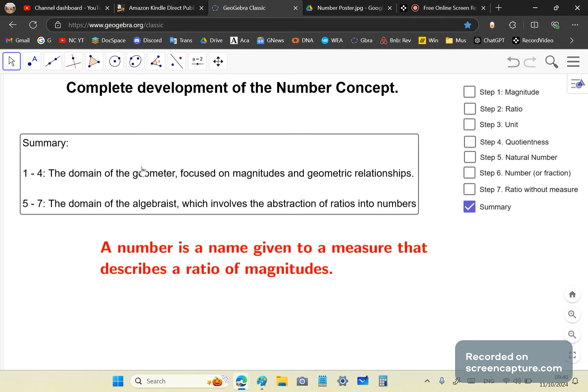There is a constant which exists as a realization of this failed measure, but it's never a number because it's never a complete measure. That's a fallacy that you'll hear in mainstream mathematics, is that pi and square root of two and all these fancy constants are numbers. They're not. In seven steps, I've given you the complete development. One to four is a domain of the geometer, and it focuses on magnitudes and geometric relationships. And also in one to four, all the arithmetic is developed. Five to seven is a domain of algebra, which involves the abstraction of ratios into numbers. I was the first to accurately define number. A number is a name given to a measure that describes a ratio of magnitudes.